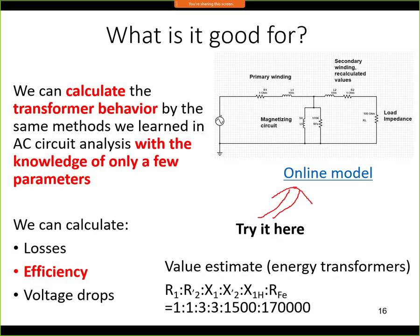Using the equivalent circuit diagram we can calculate the behavior of the transformer — the same approach applies to induction motors. We can calculate things like losses, efficiency, and voltage drops in the circuit. We require only a few parameters: the inductances and resistances in the circuit. It's very simple to get those numbers from measurements, and you will do this in the lab class as well.